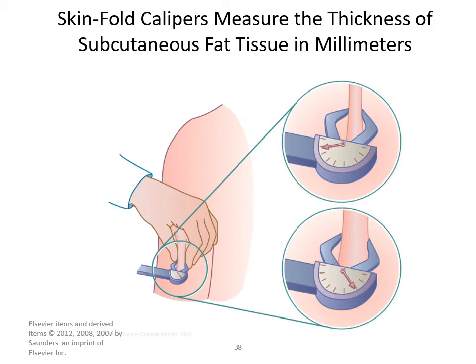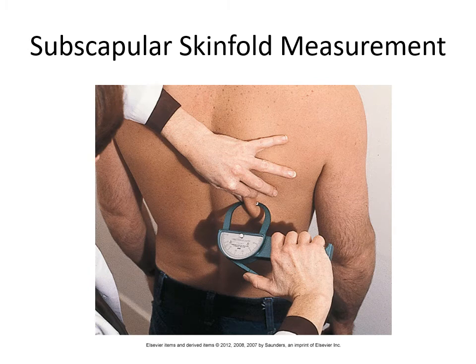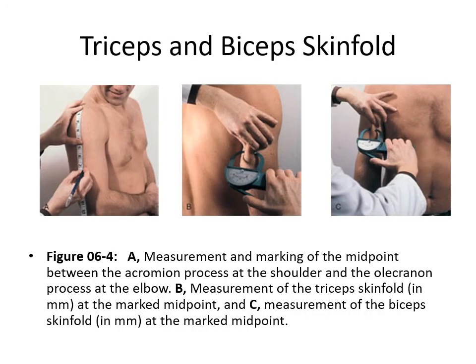Skinfold measurement is minimally invasive; changes take three to four weeks to occur and accuracy decreases with increasing obesity. Skinfolds are most reflective of body fatness when measured at the triceps, biceps, lower scapula (subscapular), suprailiac crest (above the iliac crest), and upper thigh. Tricep skinfold and subscapular measurements are most useful because the most complete standards exist for these specific sites.